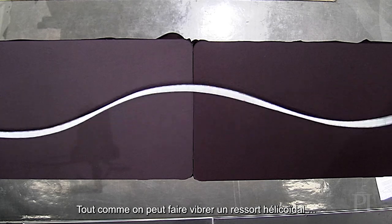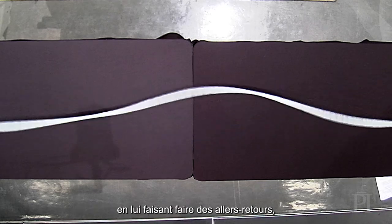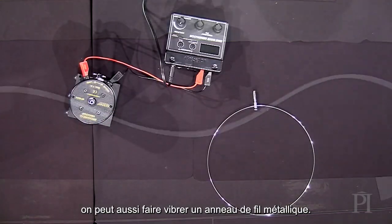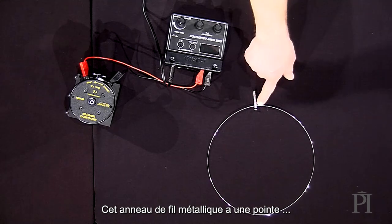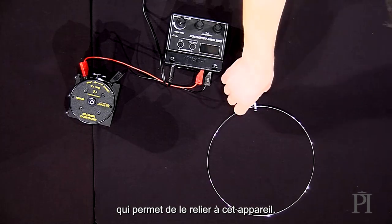Just as we can create vibrations on a coil spring by moving it back and forth, we can also make vibrations on a wire loop.